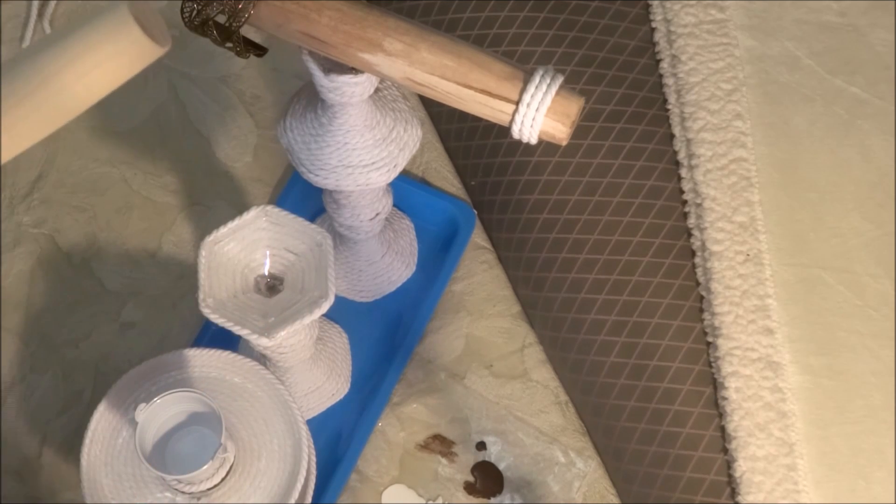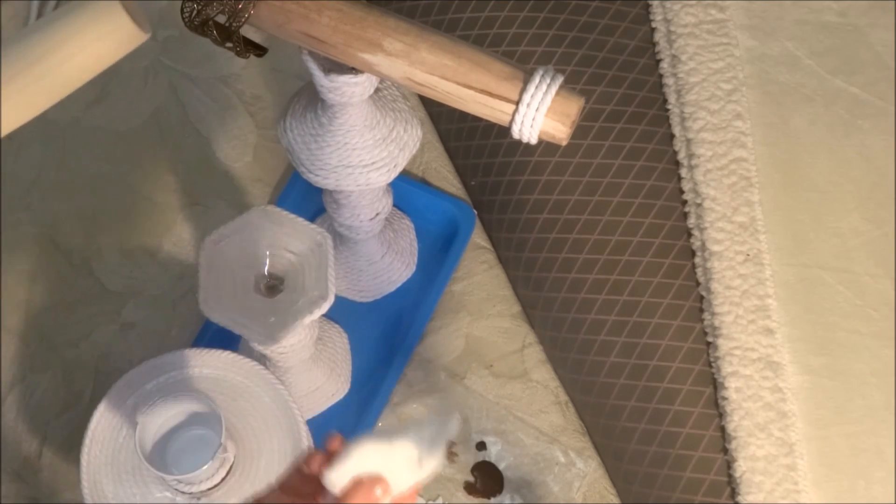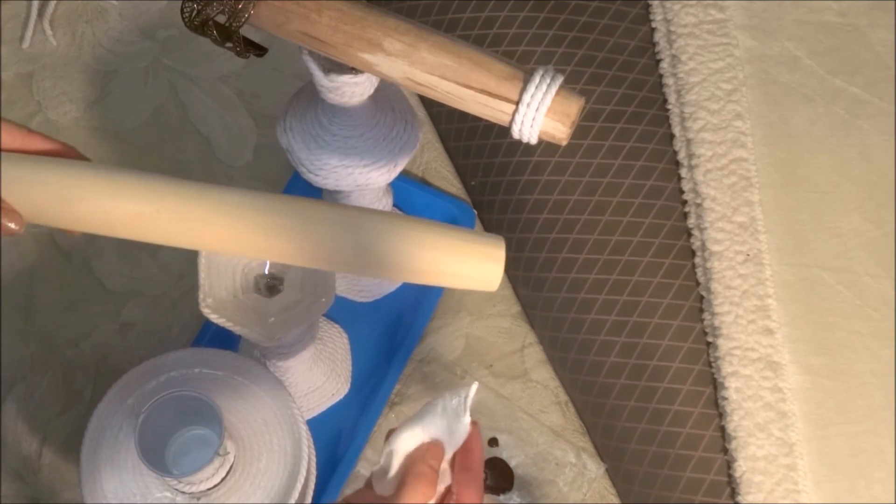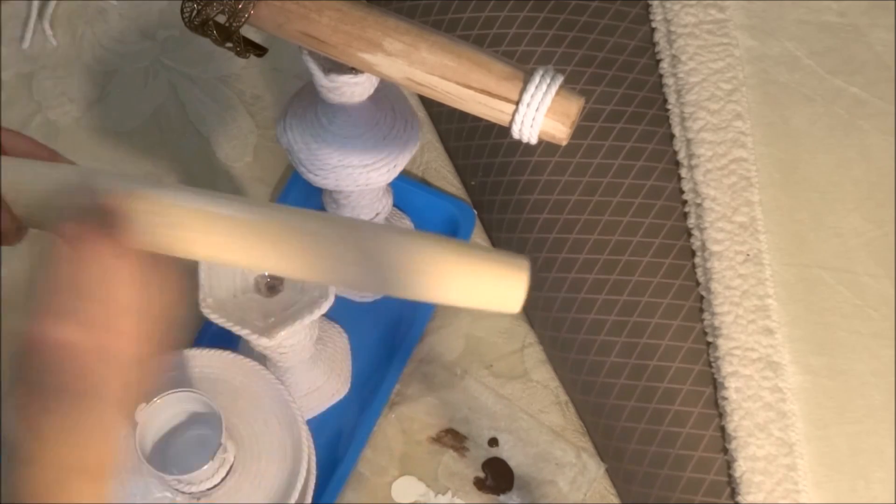So what I did to get this look is I just took a napkin and I dabbed it in some white paint and then you just rub that onto your rolling pin.